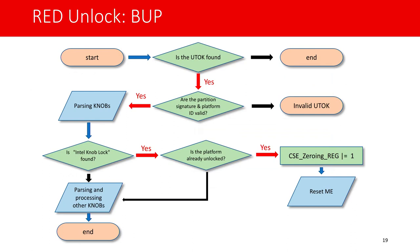Die Öffnung von Rot funktioniert nach diesem Zustandsdiagramm in zwei Schritten. Das Gerät namens BUB öffnet eine Partition. Wenn die Partition gefunden wird, überprüft BUB die Signatur der Partition und die Identifikation der Plattform. Außerdem prüft BUB die Zeit. Das Gerät UTOK hat eine Zeitbegrenzung. Wenn das alles okay ist, erlaubt BUB den Zugriff auf die UTOK-Partition.